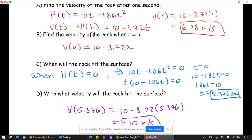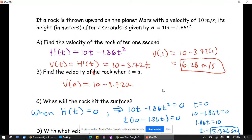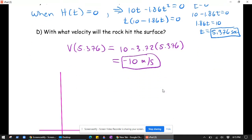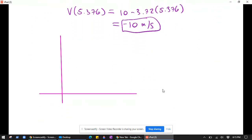The height function is just a parabola. We actually factored over here, so it's t times 10 minus 1.86t. We know that it's a parabola that opens downward that essentially looks like this.